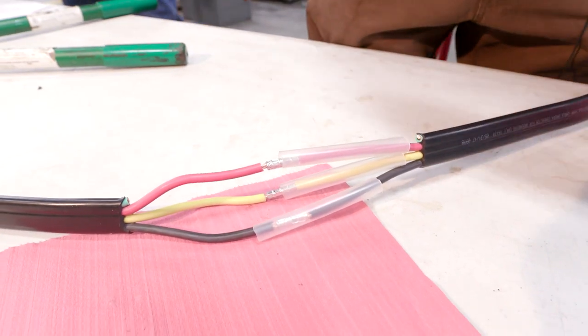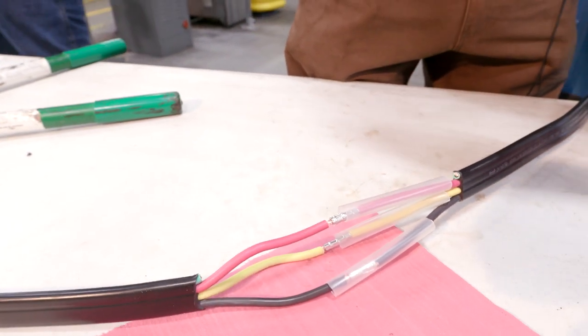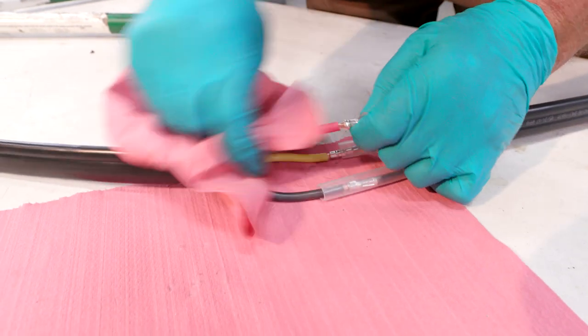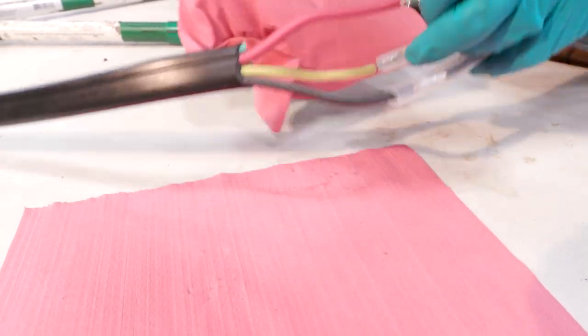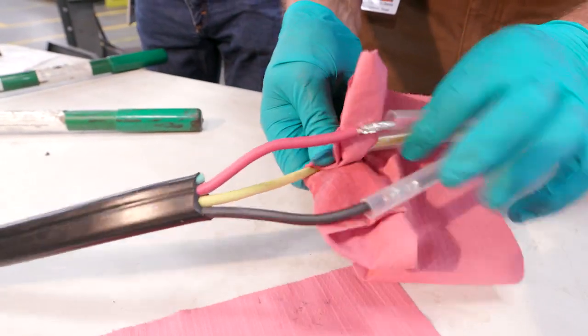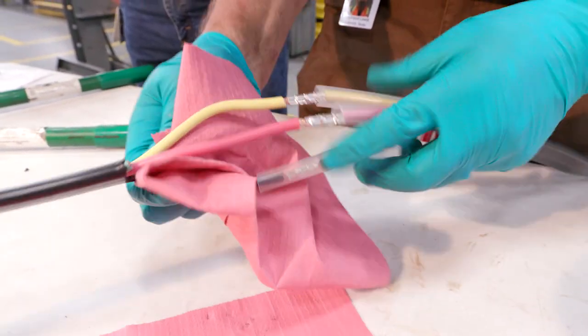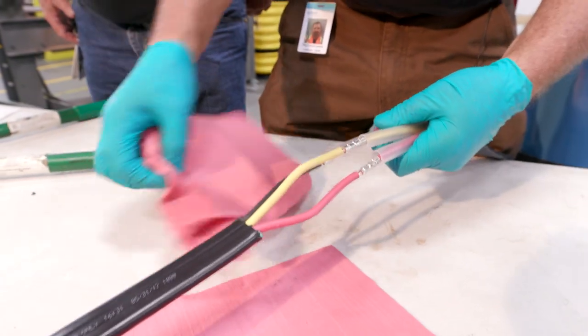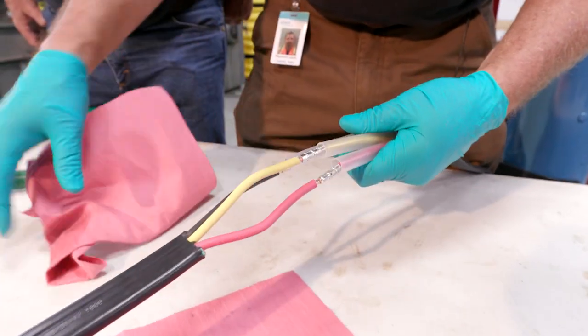We want to clean the other section of wire. Use our acetone again. We'll clean these wires and make sure they're good and clean. Why are you cleaning it? For the adhesive to stick to the wire properly so we don't have any grease or fingerprints on there.